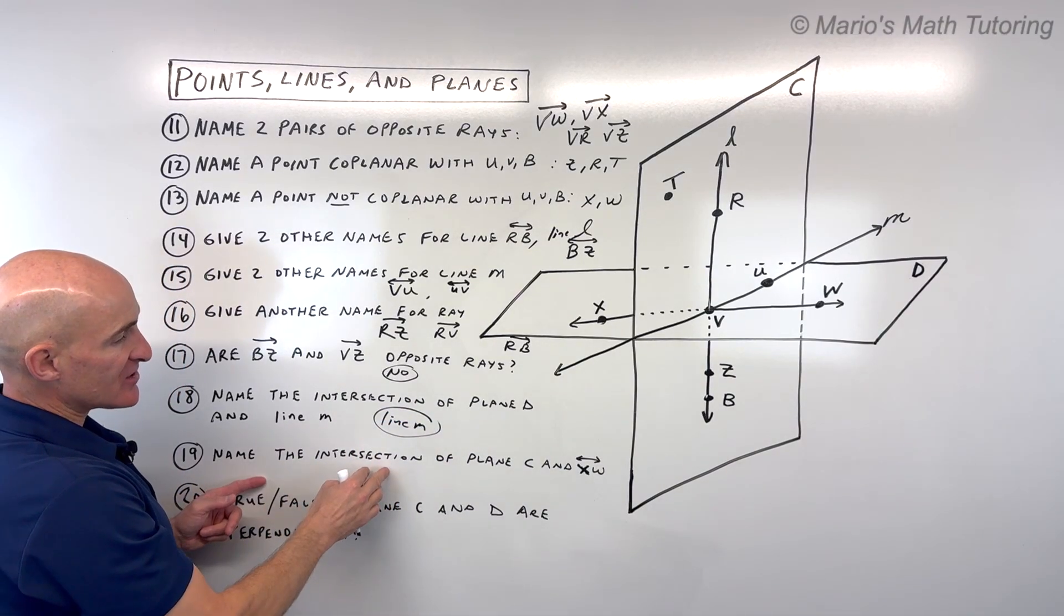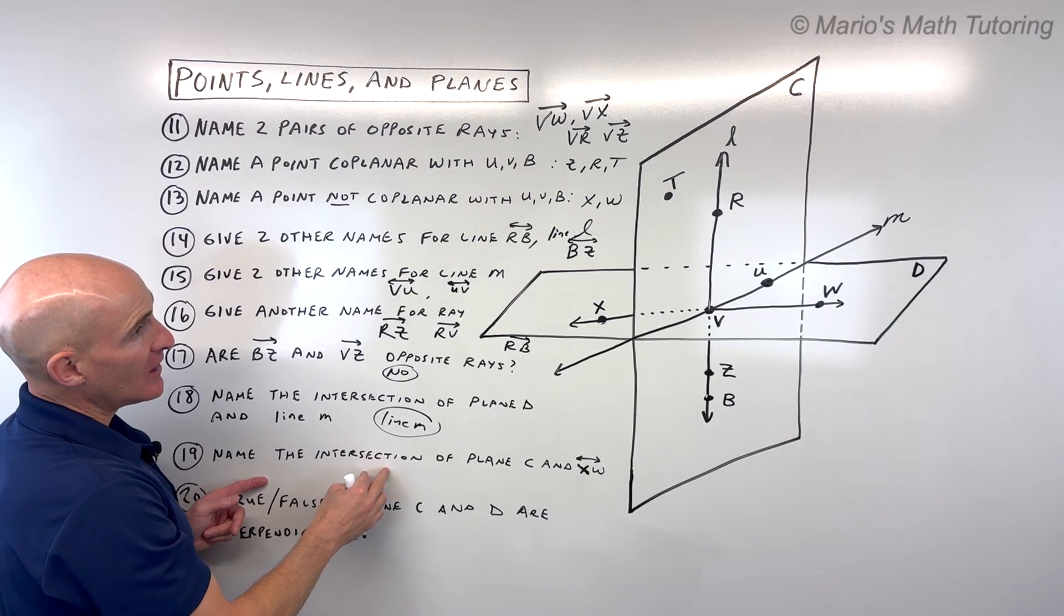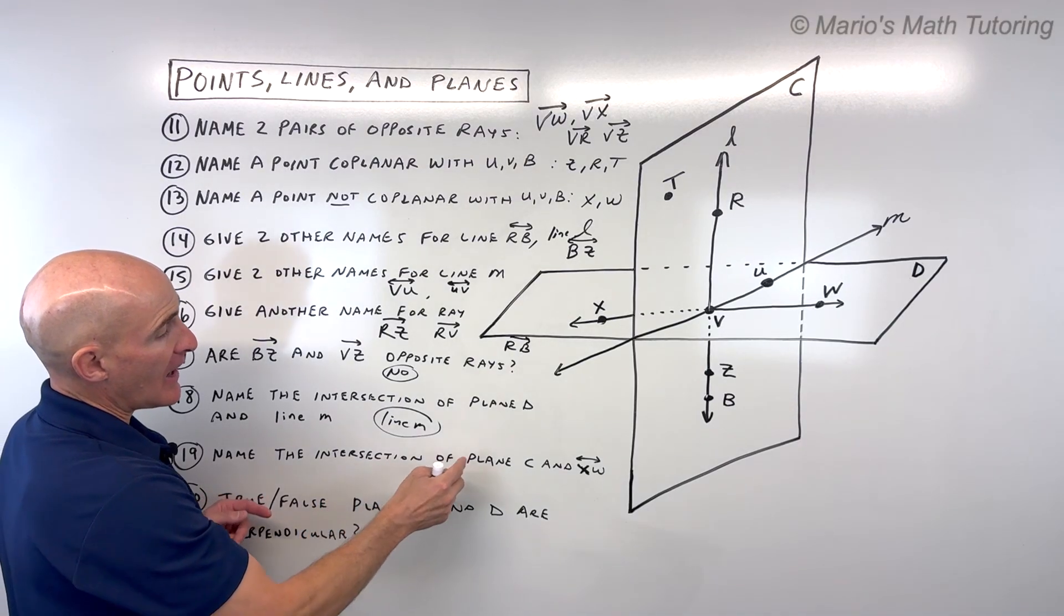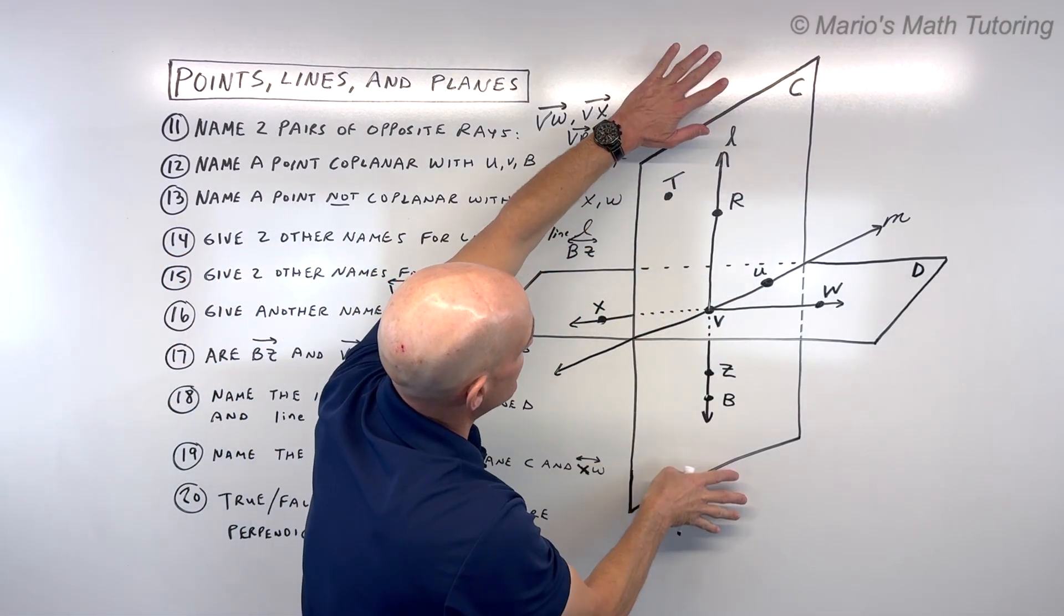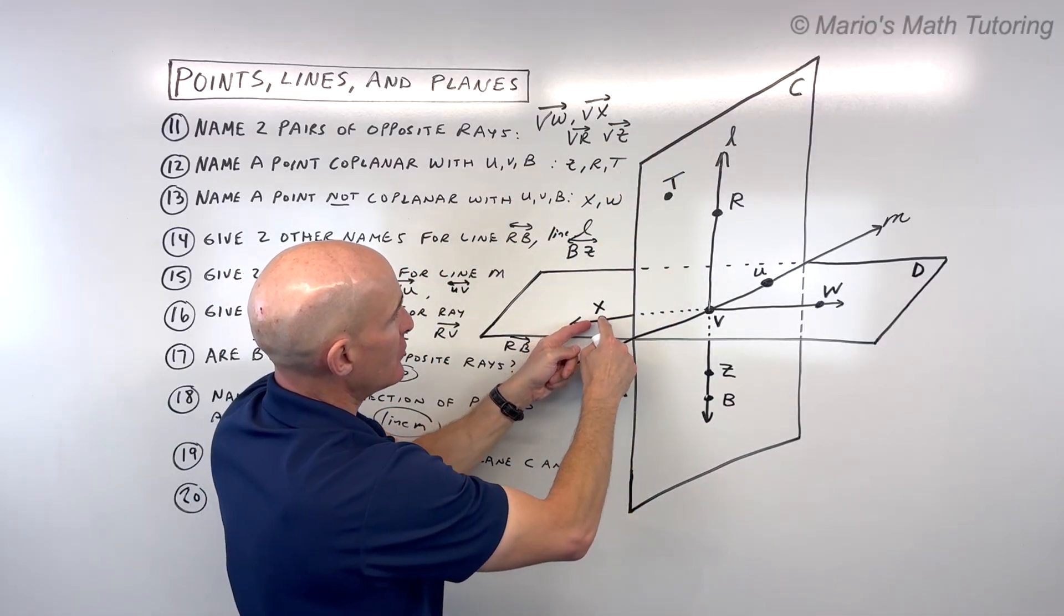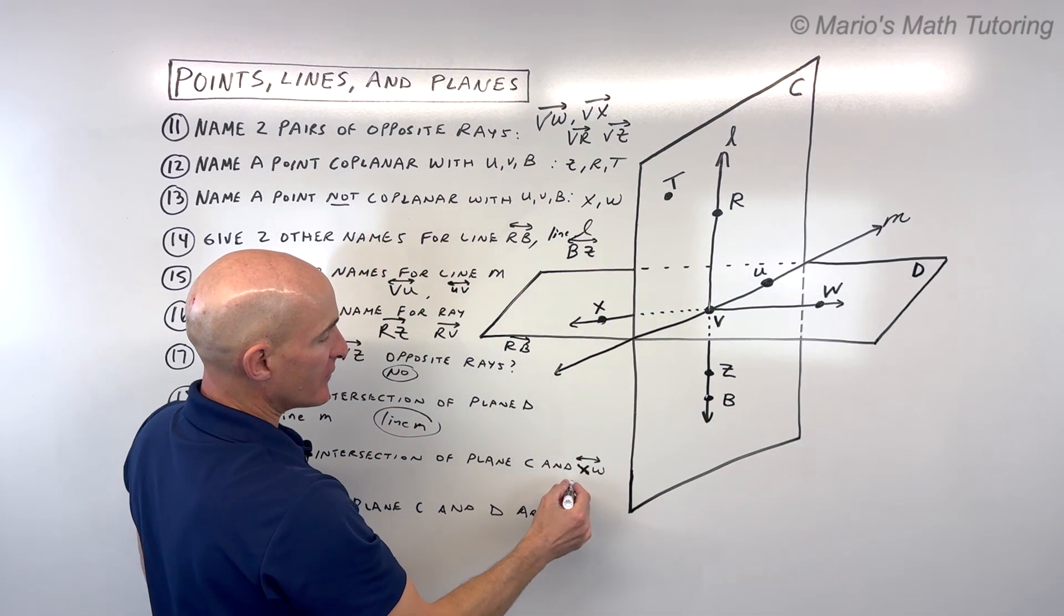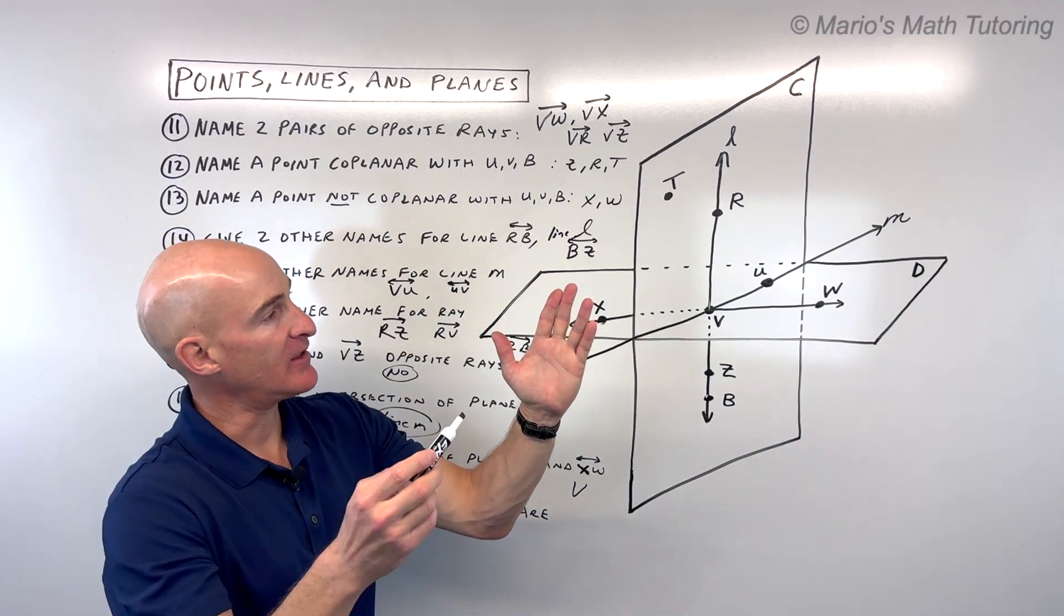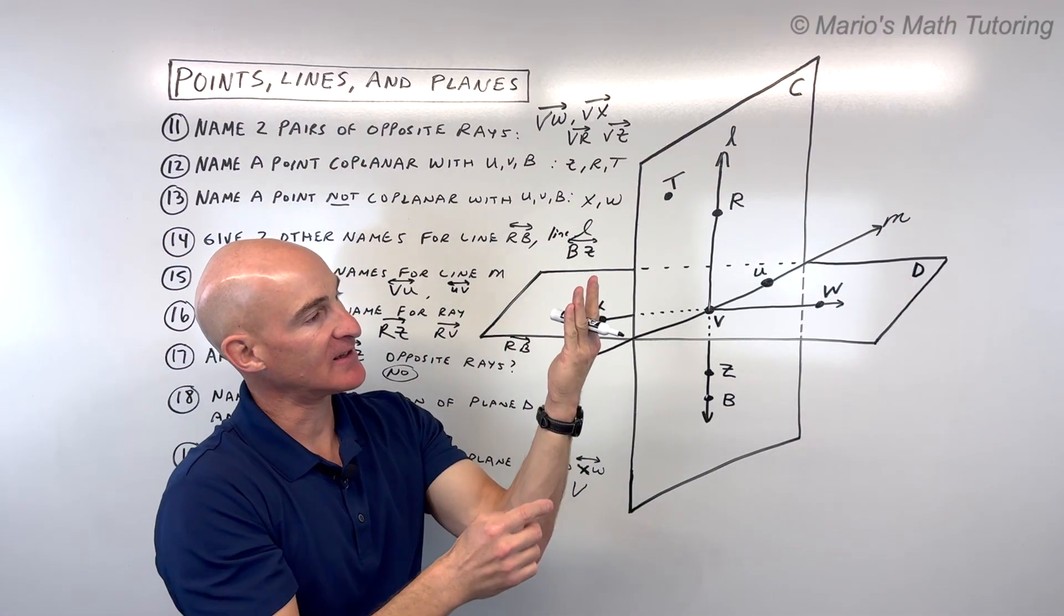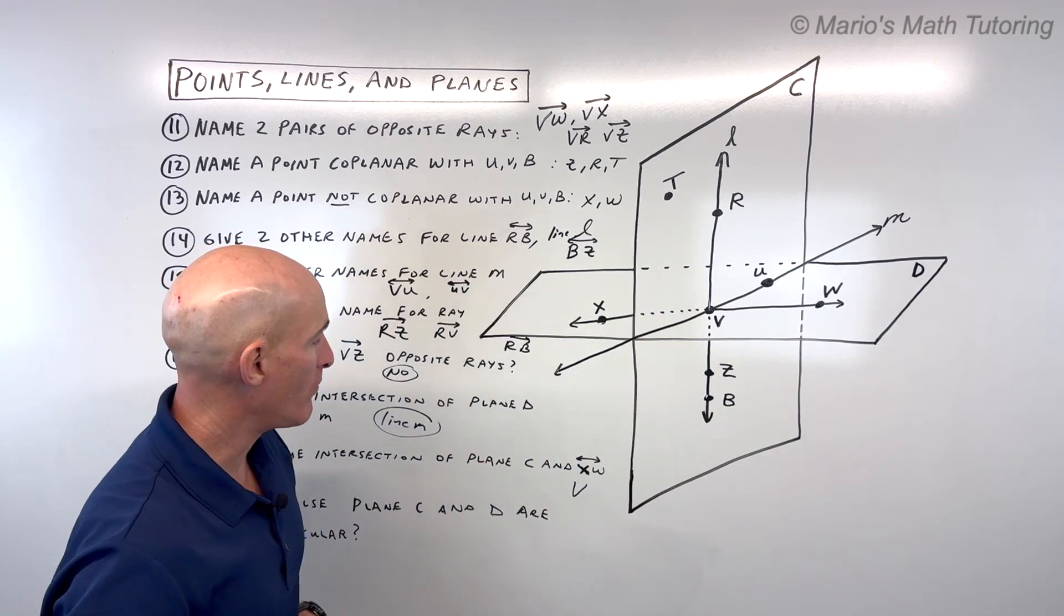For number 19, name the intersection of plane C and line XW. Plane C is this vertical plane. XW is this line right here. They're crossing right at point V. It's almost like here's a plane and the line is going through the plane and it's just crossing at one point.